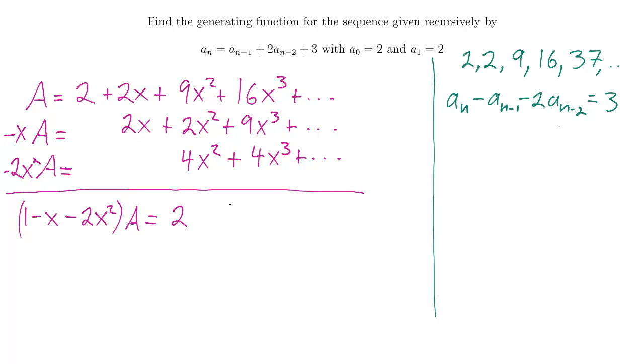2x minus 2x is no x. That sounds good. How about 9x squared minus 2x squared minus 4? That gives me actually a 3x squared. 16x cubed minus 9x cubed, that drops me down to 7x cubed minus another 4x cubed. That's going to give me a 3x cubed. What's going on here? Well, it's not actually surprising at all. Whenever we do a subtraction of these three terms, we should get 3 left over. Because over here, we have this recurrence relation. When we take a term, subtract the previous term, subtract 2 of the term before that, we always get 3.